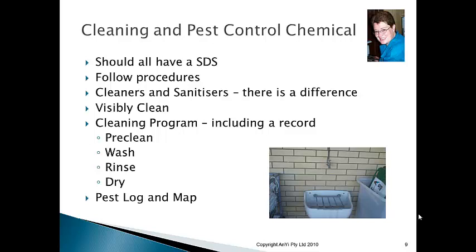Pre-cleaning involves scraping surfaces. Washing uses your cleaning chemical. Rinsing uses fresh clean water — use hot water carefully with appropriate PPE. Drying is best done by air drying; if not possible, use disposable paper towels — use once and throw away. For pest control, there should be a log in your business. If you see any pests — rodents, insects — record it. There should also be a map showing all pest control stations and traps.